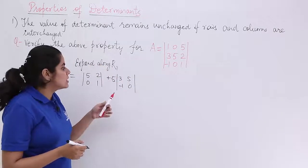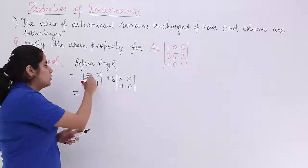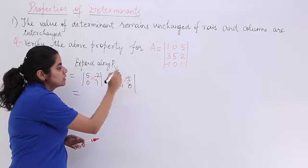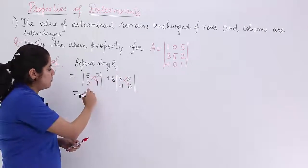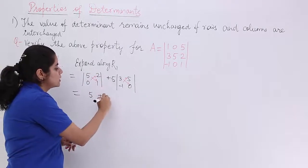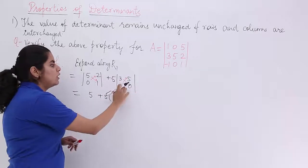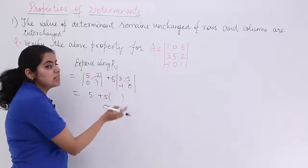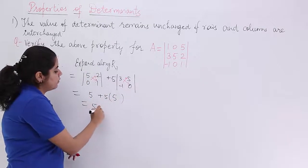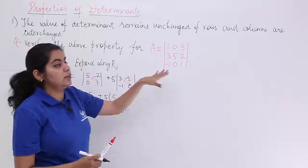Now, what is to be done? Simply you need to evaluate this. Cross multiply here and here. Mind it, this is 0. Now it is 5 times 1 minus 0 into 2, which is 0. Plus 5 into something. What is 3 times 0? It is 0. What is 1 times 5? It is 5. You have minus here and one more minus, so it is 5. The answer is 5 plus 25, which makes it 30. But this is the answer for the given thing.